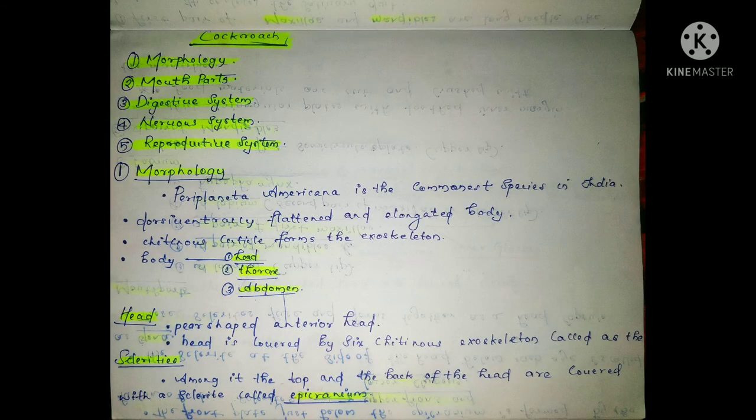We are going to study a little bit of portions in this topic. The most important things we will cover include morphology, mouth parts, digestive system, nervous system, and reproductive system. We will study these most important topics.